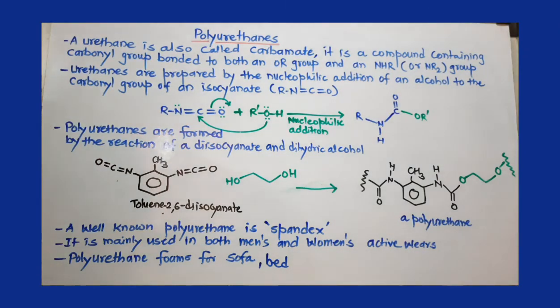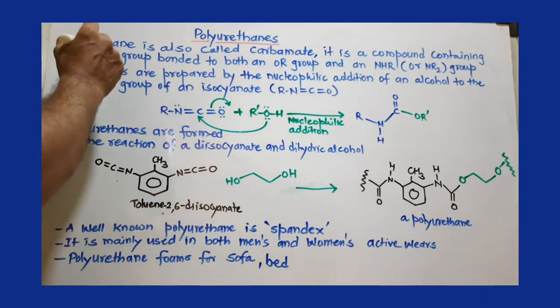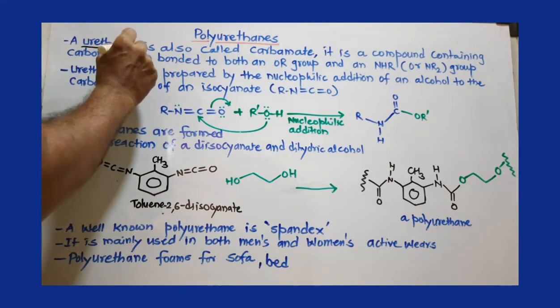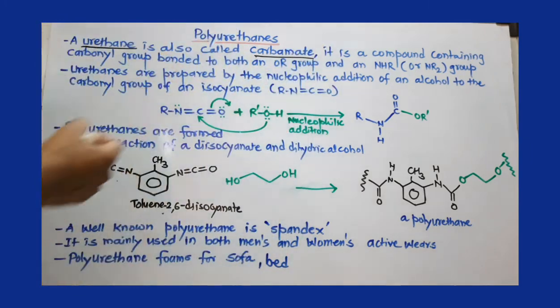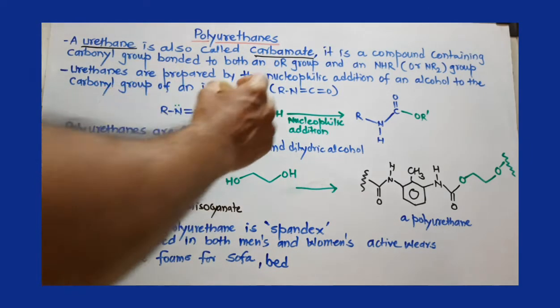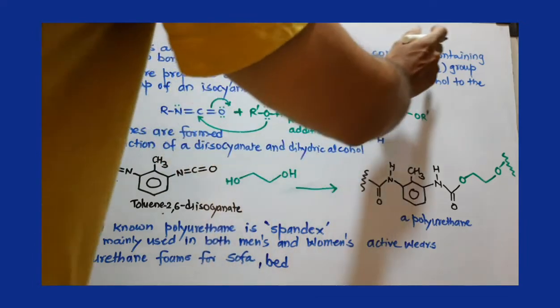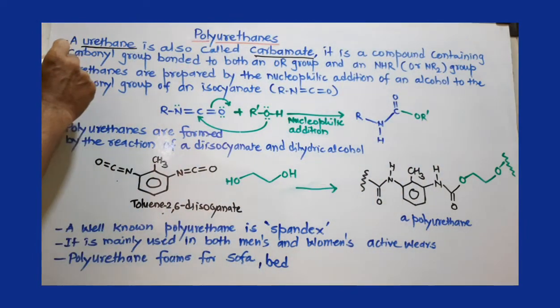Polyurethanes. First of all, you should understand the meaning of urethanes. Urethane means carbamate. Urethanes are also called carbamates. What is the meaning of carbamate? These are compounds containing a carbonyl group.